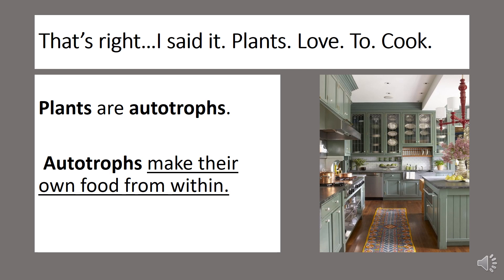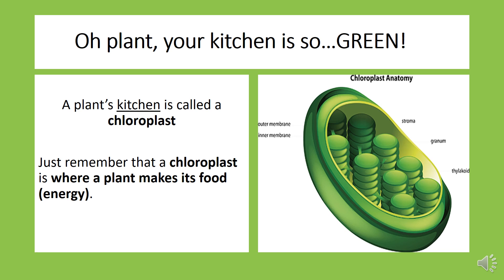Of course, a plant's kitchen doesn't look like a regular kitchen. A plant's kitchen looks more like a throwback from the 1970s — it's so green. This green little kitchen is called a chloroplast.